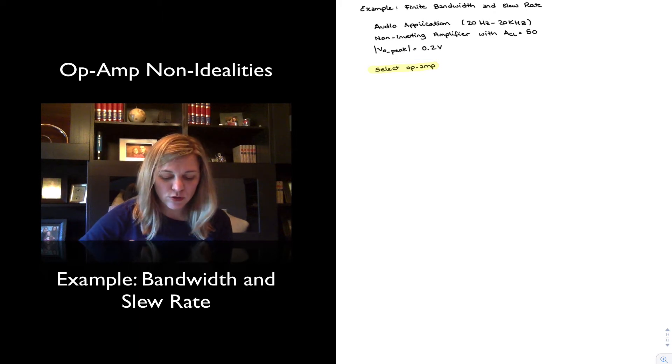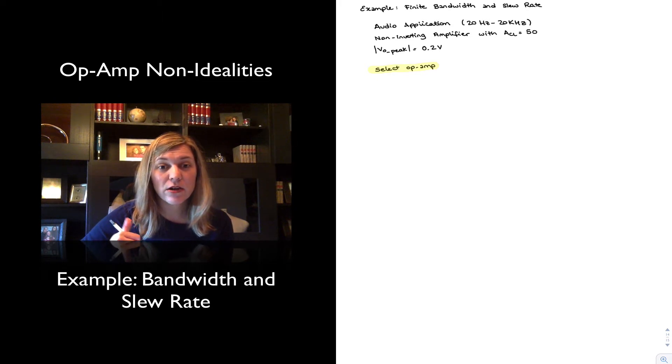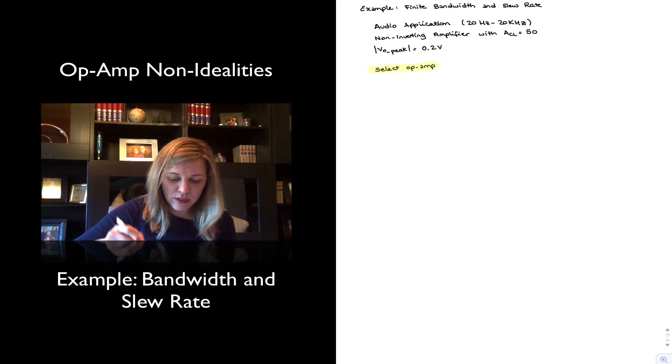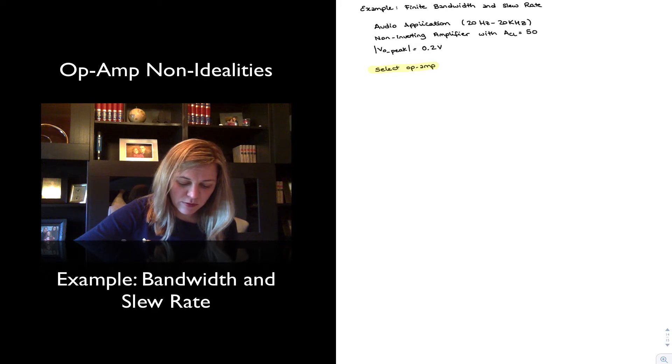The first thing that we need to do is select an op-amp for our application. Actually, the only thing we need to do is select an op-amp for our application. The specs that are going to affect our AC performance in this case are the bandwidth and the slew rate. We want to figure out what's the minimum bandwidth and the minimum slew rate that our op-amp needs to have for this particular application. Just to make it a little bit more interesting, I'm going to change instead of making this the peak output voltage, I'm going to make it the peak input voltage.